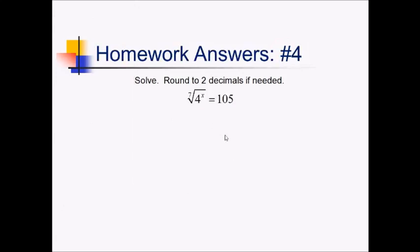On this problem, this looks a little bit messy here. Probably can't use the common base method. There's no easy common base between 4 and 105, so I'm going to have to somehow use logarithms on this. To make my life easier, I'm going to rewrite this left side using a fractional exponent. So I'm going to write this as 4 to the x over 7. And now I can take the log of both sides and solve it that way.